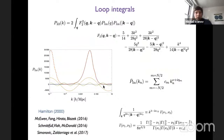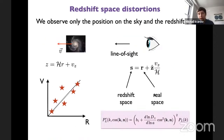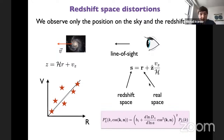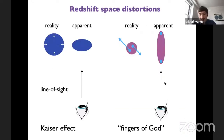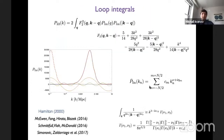In the EFT, the description of redshift-space distortions is relatively simple: you take the EFT velocity and use the same coordinate transformation formula. In principle redshift-space distortion is a fully non-linear effect, and the EFT provides a systematic way to take it into account.